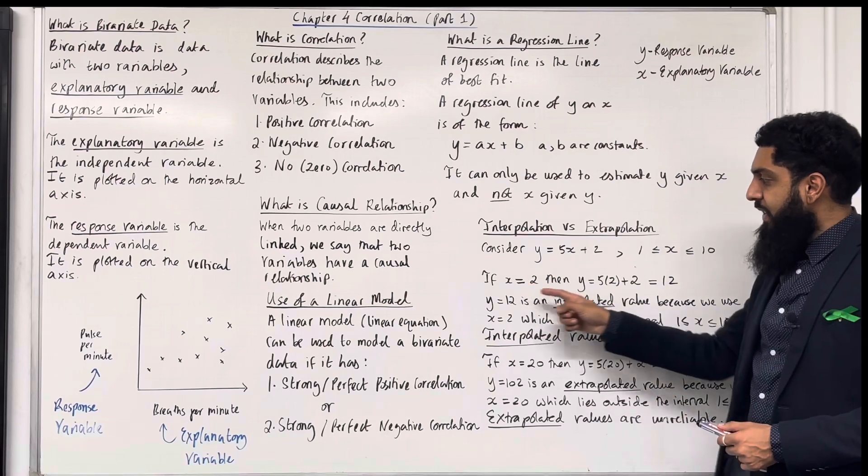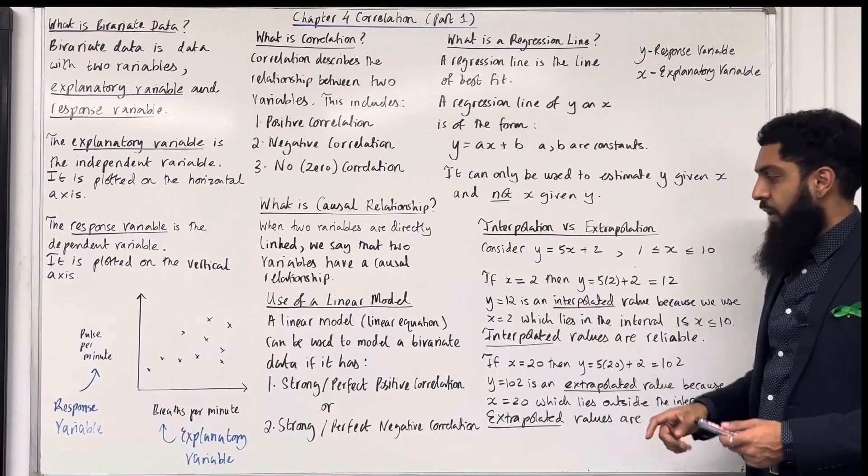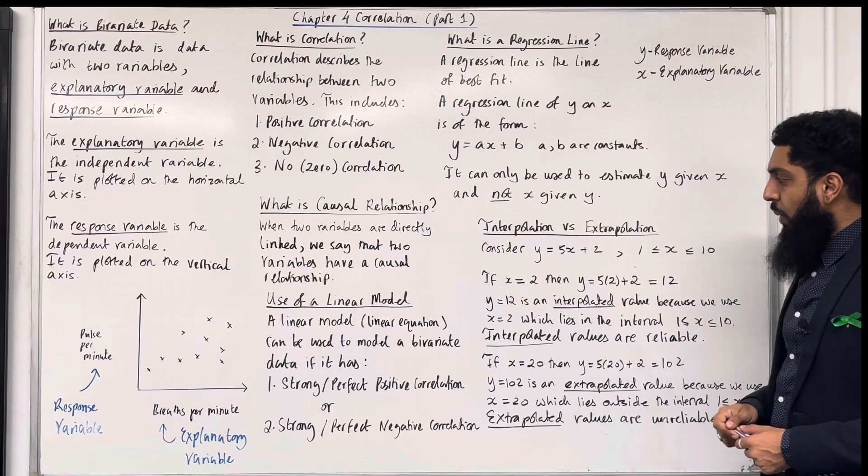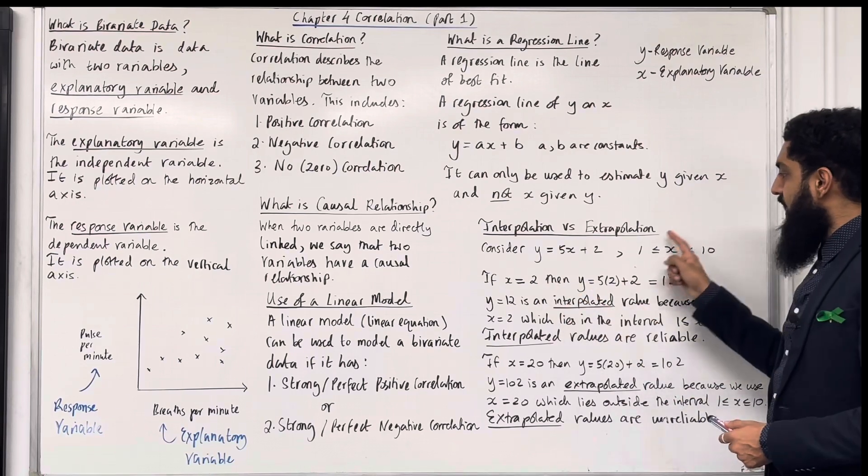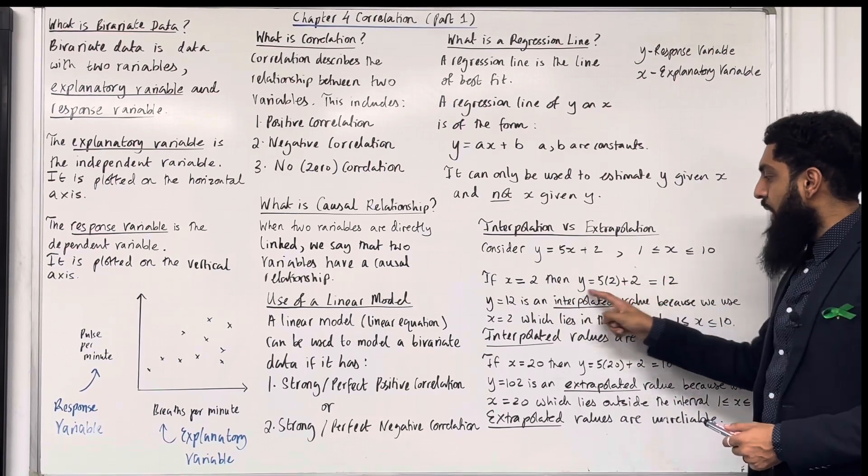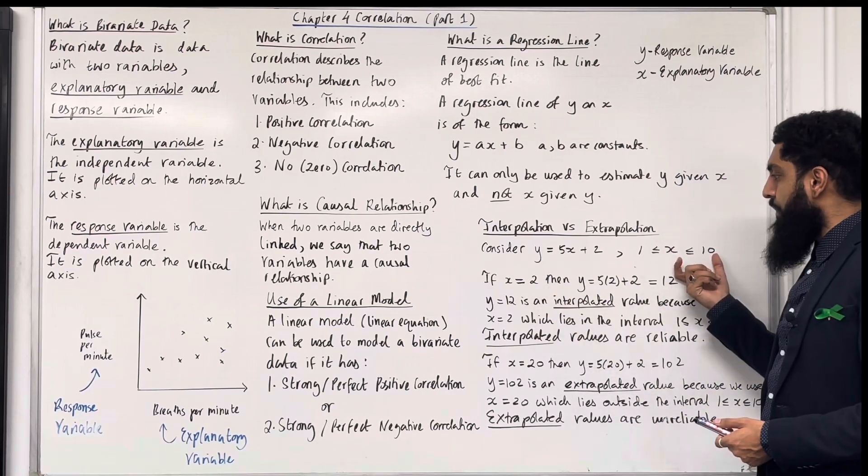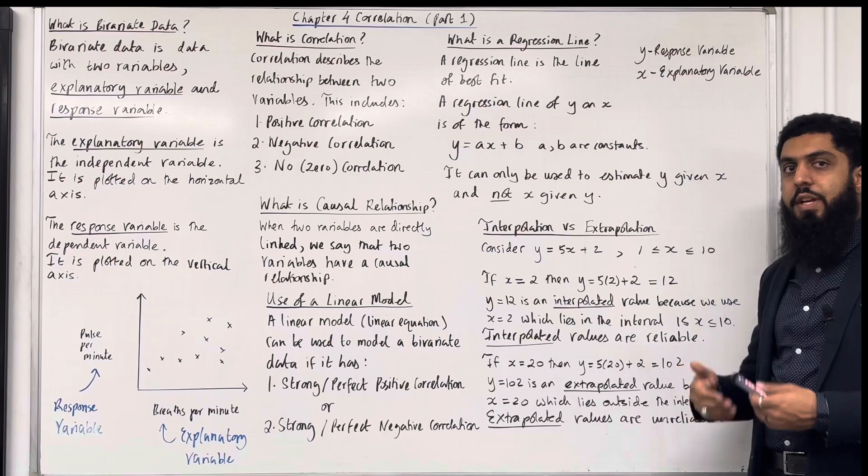If x is equal 2, we can estimate y, so y will equal 5 times 2 plus 2, which is 12. Now, x equal 2 is in this interval. So we call y equal 12 an interpolated value. We've used an x value within this interval. An interpolated value is reliable.